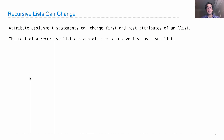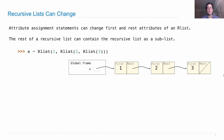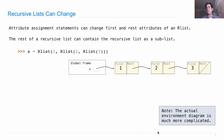The rest of a recursive list can contain the recursive list itself as a sub-list. For example, say I create S as 1, 2, 3. I've effectively created a structure where the actual environment diagram for classes and objects is much more complicated, but conceptually we have the name S bound to an object with a first and a rest. The first is 1, and the rest is a recursive list as well.